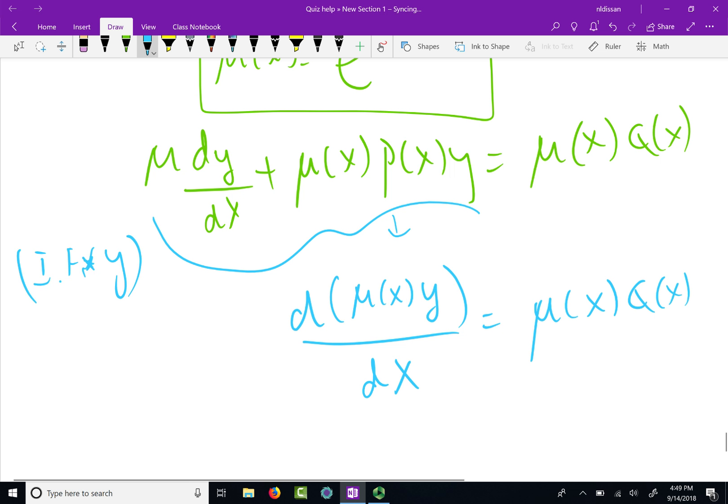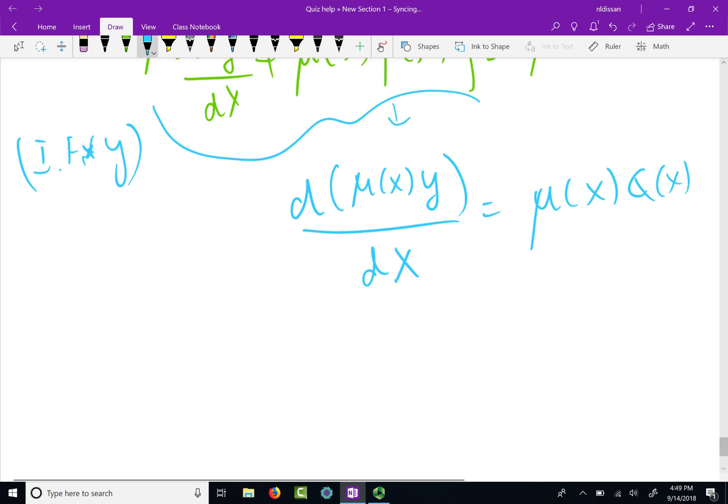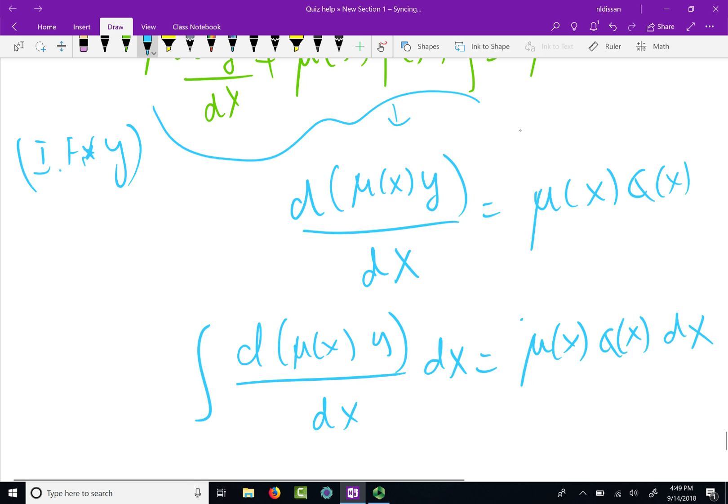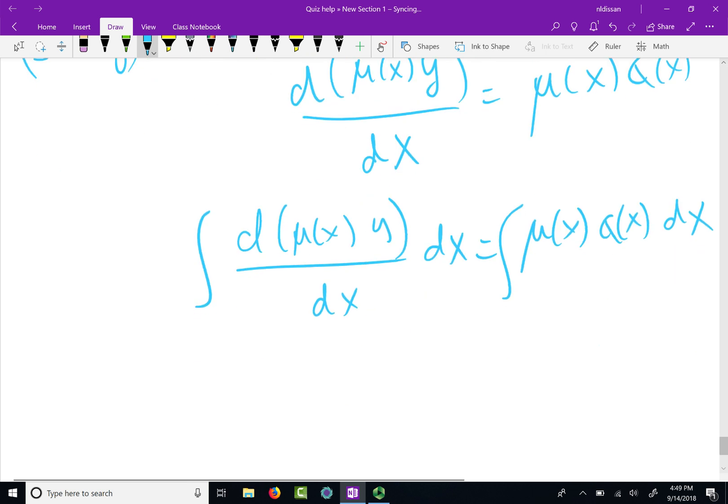All right. Now, once you shrink that out, what do you do? You multiply both sides by dx. Multiply both sides by dx because we are going to do an integration. We need to integrate with respect to x. So that is where you multiply by dx.